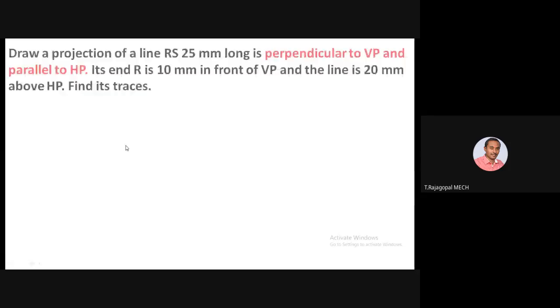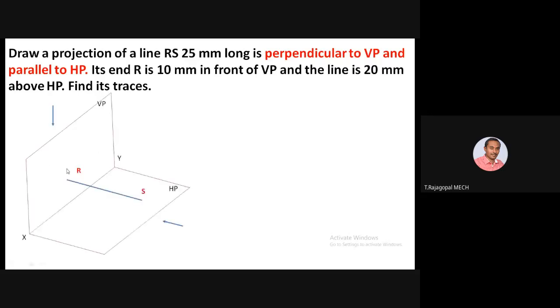We will see how traces can be drawn for a basic problem. The line RS is perpendicular to VP and parallel to HP. One end is 10 mm in front of VP and 20 mm above HP. Since it is parallel to HP and perpendicular to VP, we can easily analyze its traces.